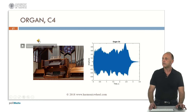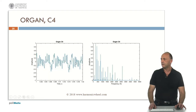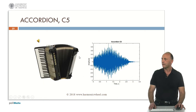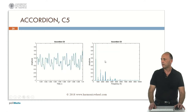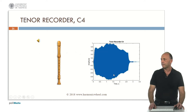This is an organ, C4. This is the spectrum with many harmonics. An accordion, C5. The envelope, the waveform and the spectrum.